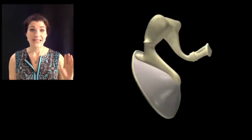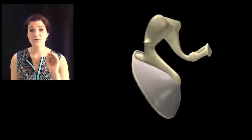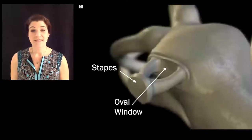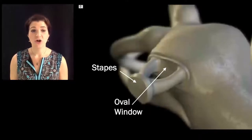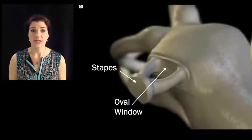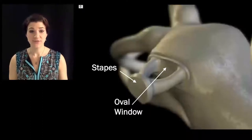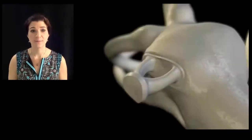So now we have gone from sound waves to vibrations in a membrane to vibrations in bone. The stapes is connected to the bony labyrinth via a structure called the oval window. When the stapes presses against the oval window, it transfers the vibrations from the stapes into the oval window and thereby into the bony labyrinth.